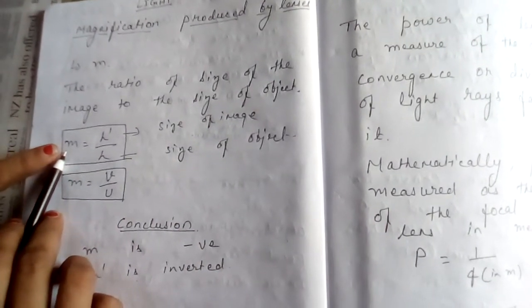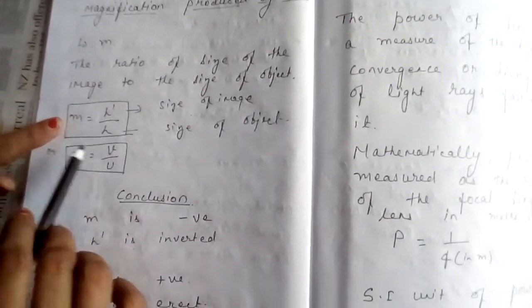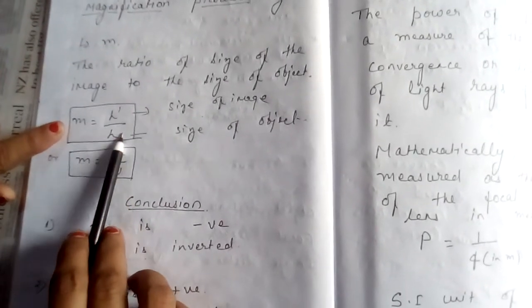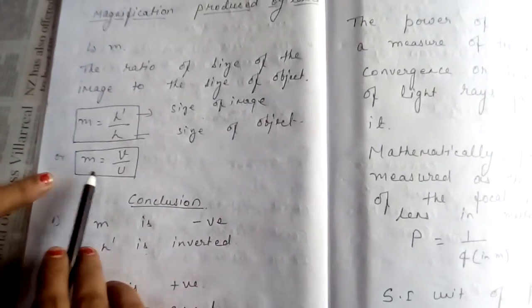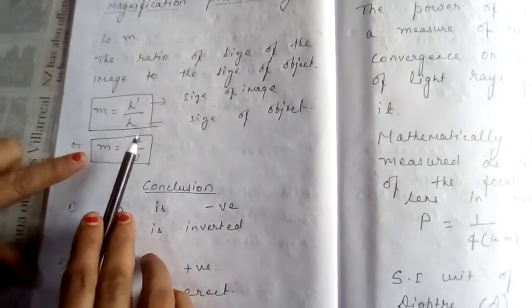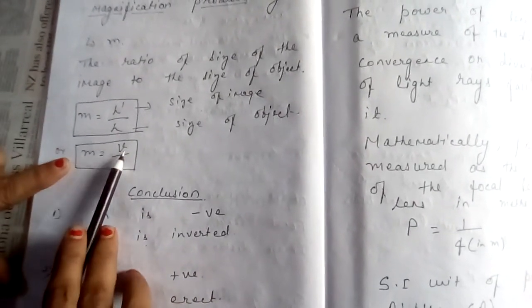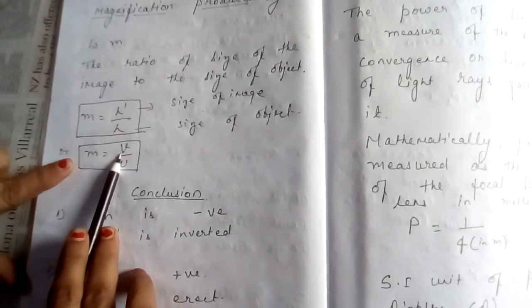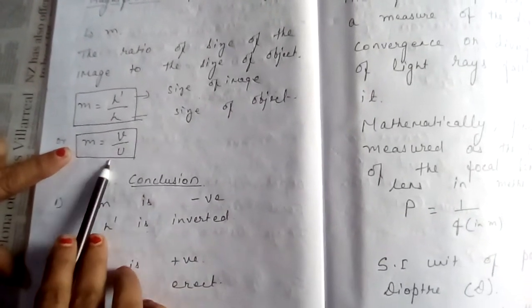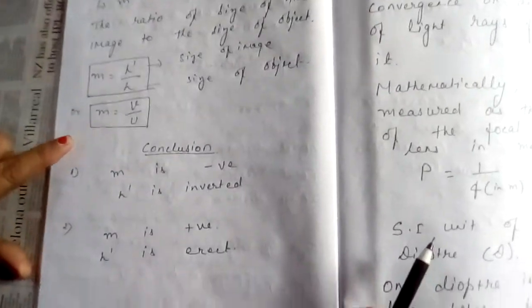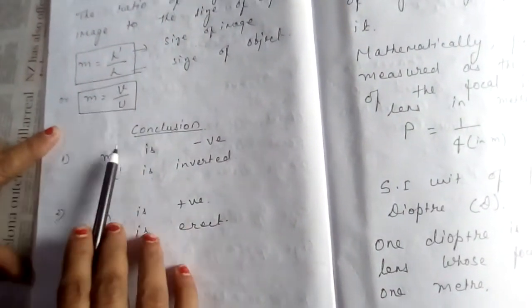Magnification has no unit because it is the ratio of same unit. Depending upon the position of object and image, magnification is V by U, position distance of image by distance of object. What conclusion are we getting from this?